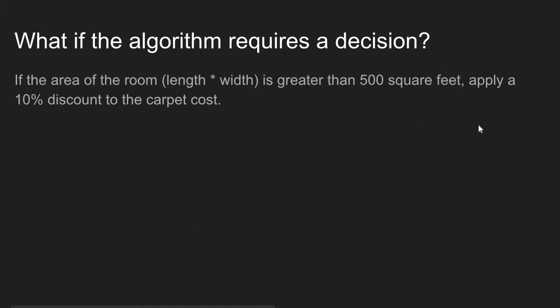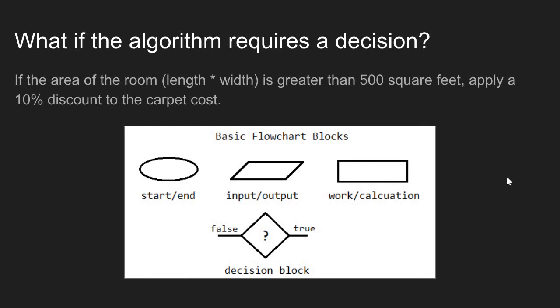And as of now, we do not have the tools in C# on how to implement this type of decision. In a flowchart, this decision block looks like a diamond. And that diamond is asking some type of question. Is the area greater than 500 feet, for example?